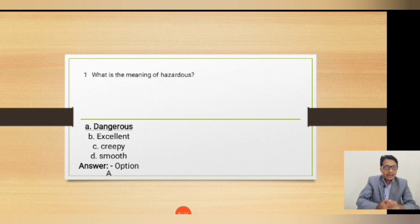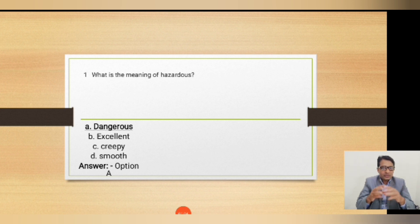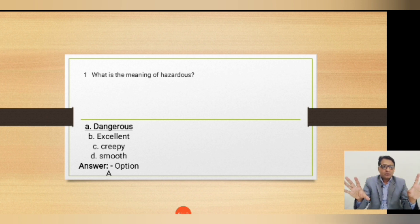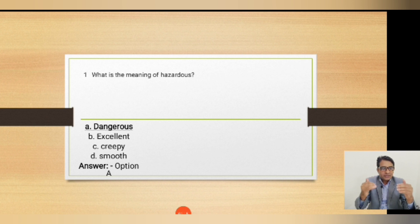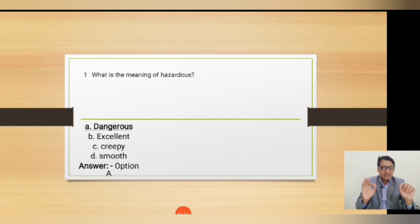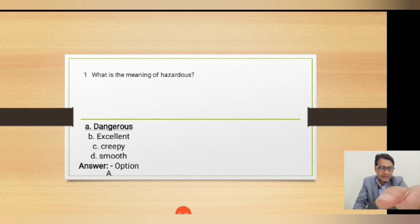Let's begin with the MCQs to understand what type of questions we will get in the examination. The first question is: what is the meaning of 'hazardous'? The four options are dangerous, excellent, creepy, and smooth. The correct answer is option A — 'dangerous.' The meaning of the word hazardous is dangerous.